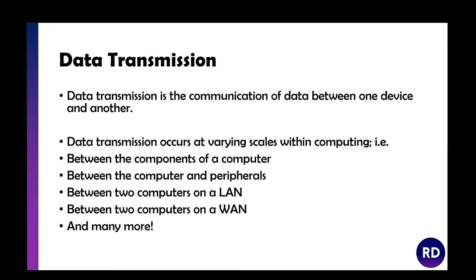It's not just, as you might have heard in some lessons, that data transmission is just about the internet and sending stuff. Data transmission occurs at varying scales within computing. It can be between the components of a computer — data buses, address buses, going between various parts of the CPU — or when the motherboard is sending signals to another part of the computer. It can be between a computer and a peripheral, such as a keyboard or a mouse, or between two computers on a LAN or a WAN. It's about how any data goes from one place to another within a computer system.